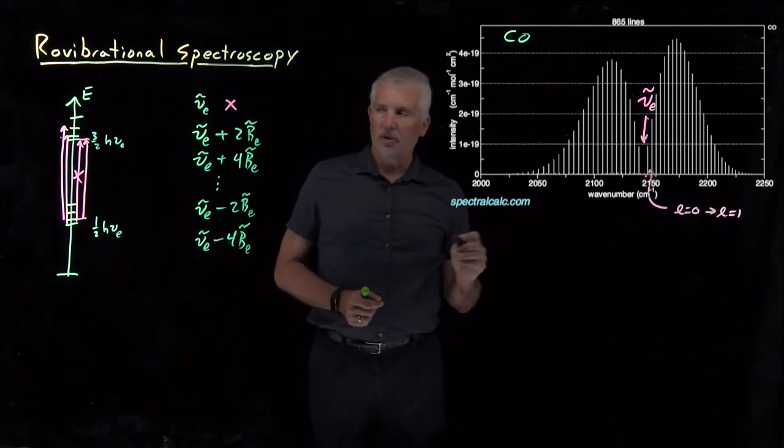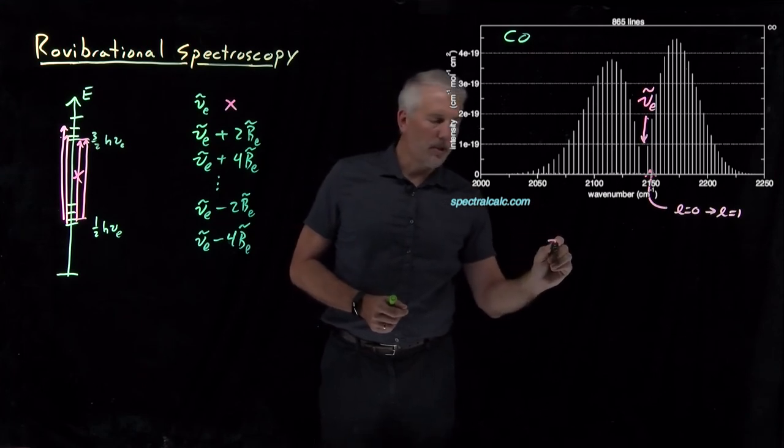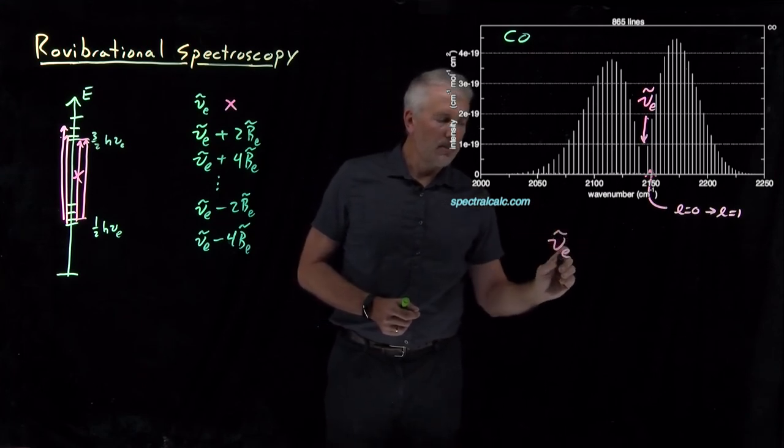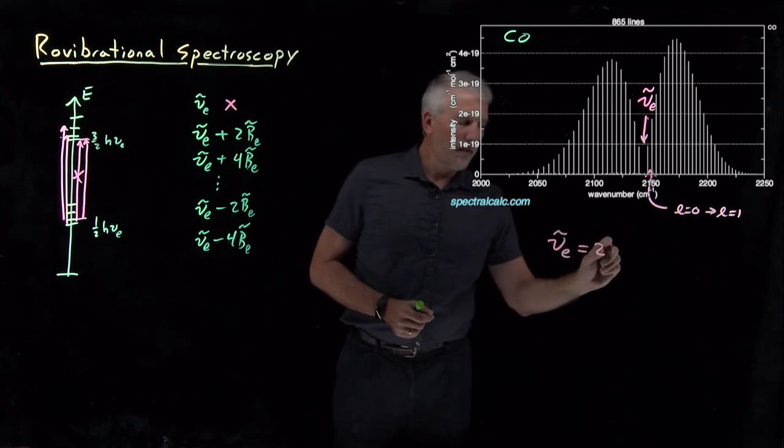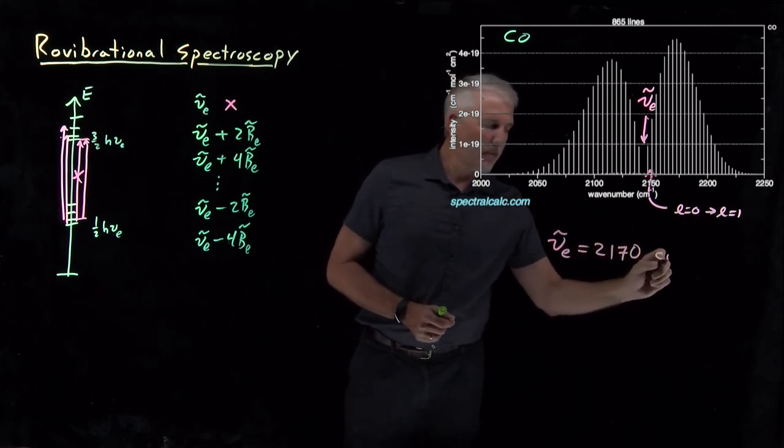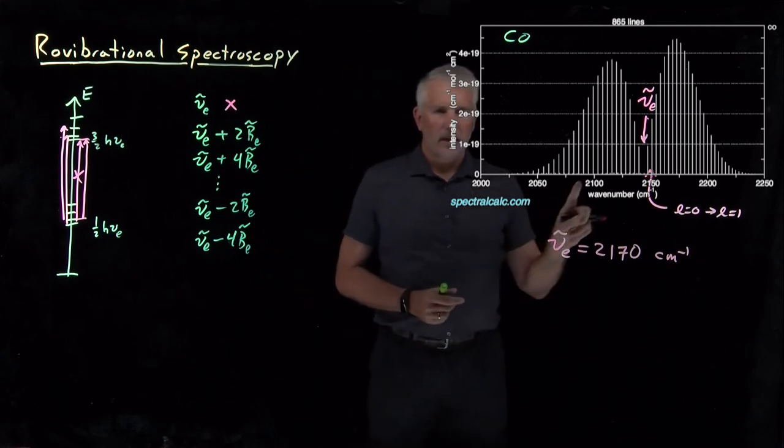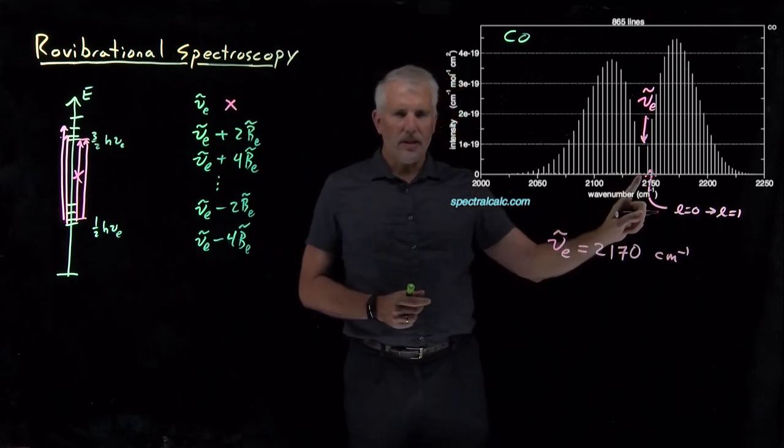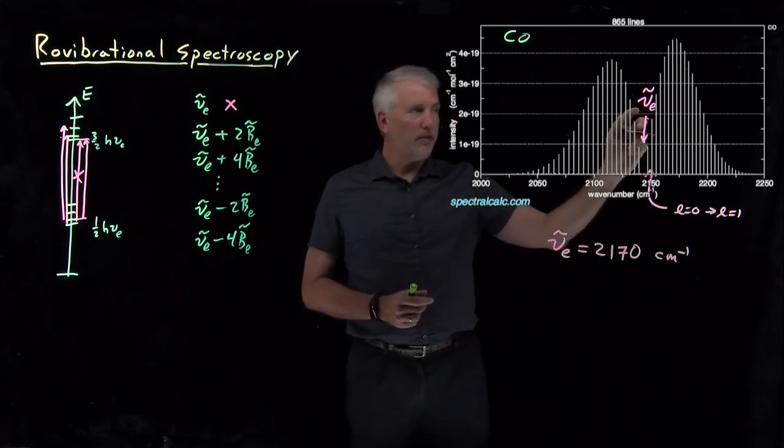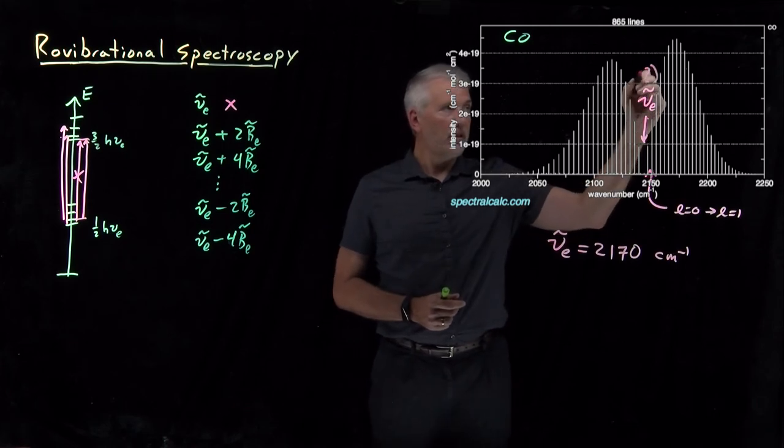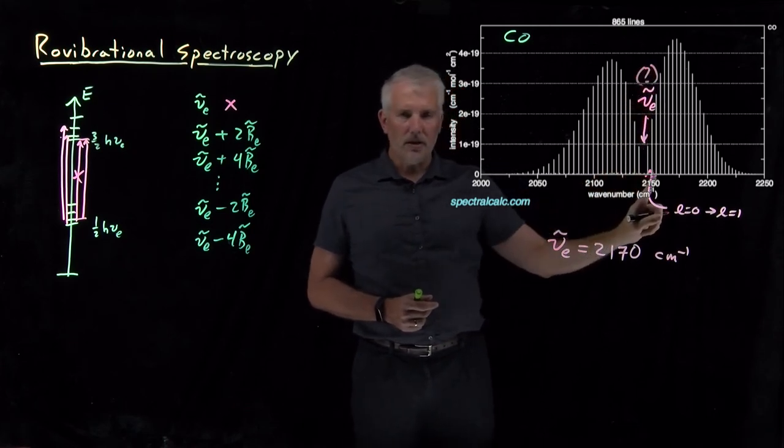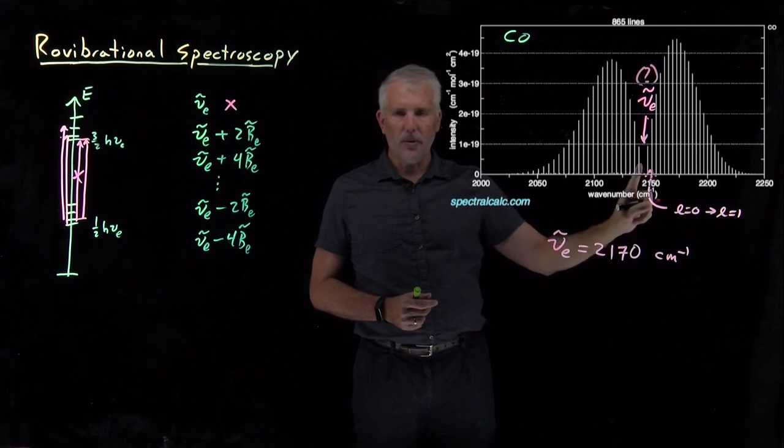There is one mystery, however, which is that for carbon monoxide, the fundamental vibrational frequency, as I mentioned, is 2170 wave numbers. If we look more carefully at the diagram now, we see that the gap where I told you should be the vibrational frequency, that looks like it's a little below 2150, more like 2140-something wave numbers.